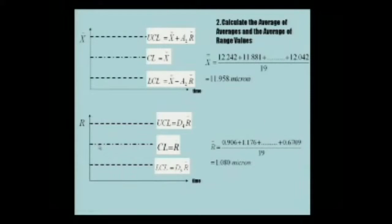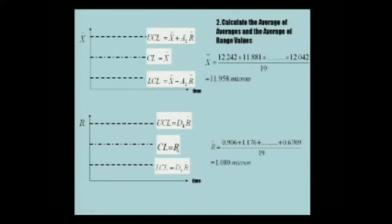Now we need the upper and lower control limits for each chart. The formulas are very simple. For the upper control limit of the X-bar chart, we need X double bar — which we already calculated as 11.95 — the average range of 1.08, and the constant A2 which depends on the sample size. For the R chart, the upper control limit is D4 times R-bar and the lower control limit is D3 times R-bar. If we can find A2, D3, and D4, we have determined all the control limits we need.